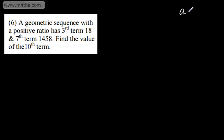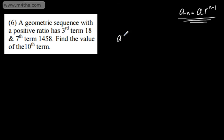The formula for the nth term of a geometric sequence is a sub n equals a times r to the n minus 1. If that doesn't mean anything to you, please check out the video prior to this. The 7th term will be a multiplied by the ratio to the power of 6, and that's 1458. The 3rd term will be a multiplied by the ratio squared, and that is 18.